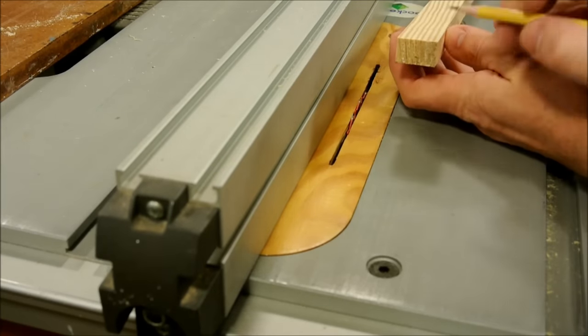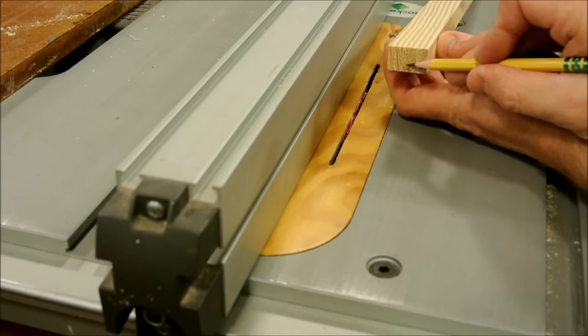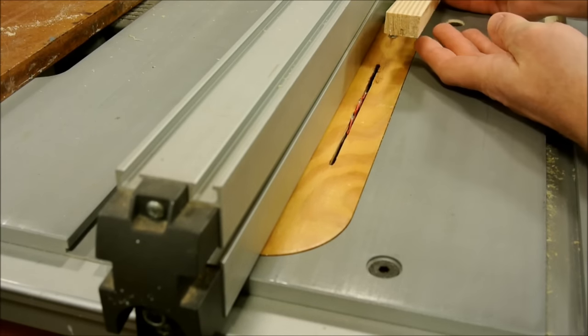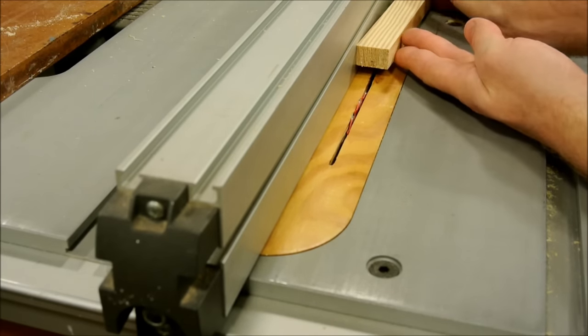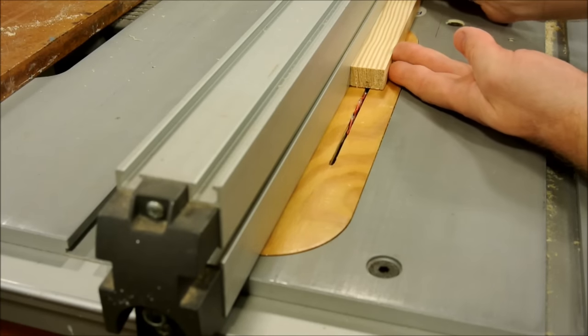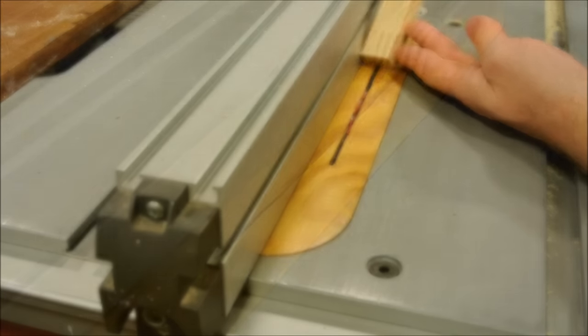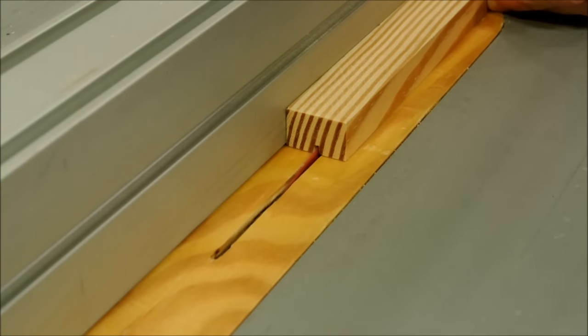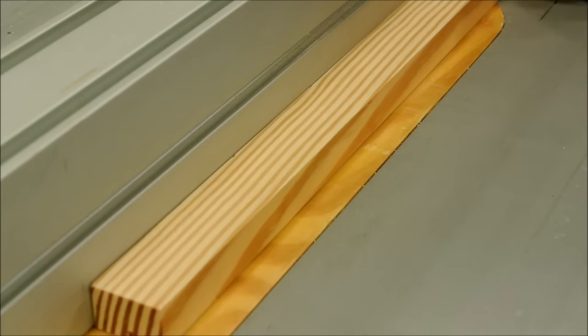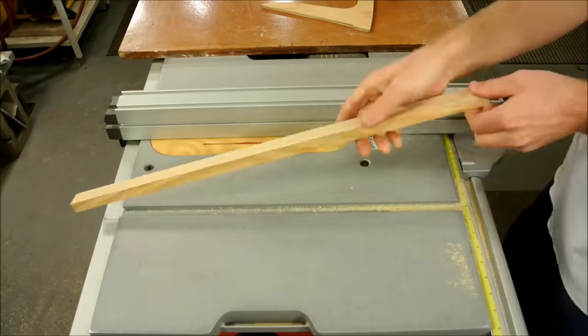Now my goal is to create a perfectly centered channel that's ⅛ of an inch deep. I don't expect to get it perfect on the first pass, so I'm just going to eyeball it, and then I'm going to flip the stock around and come at it from the other side, and that will ensure that it's perfectly centered.